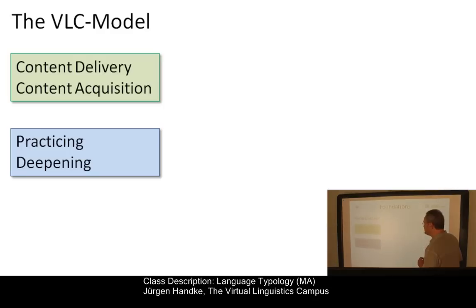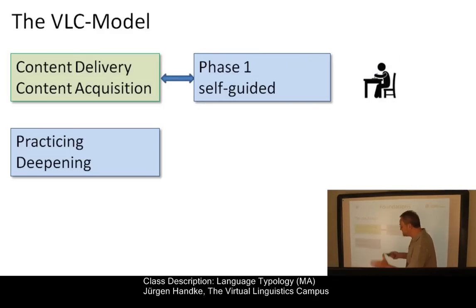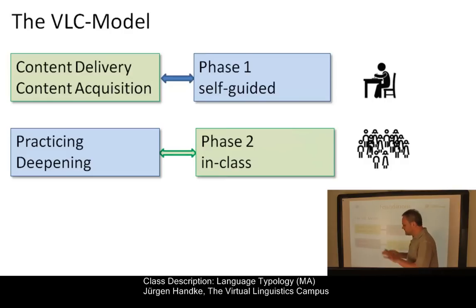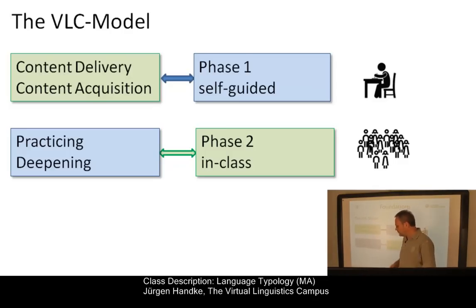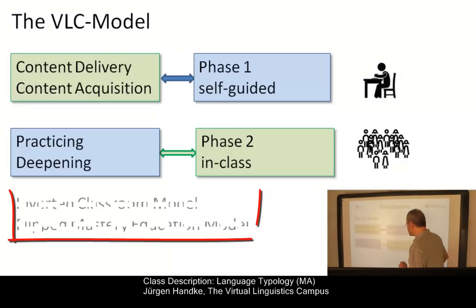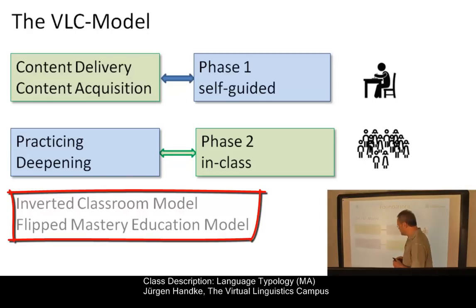We will flip these two activities. Content acquisition is now self-guided, takes place first, and is done online. The additional in-class phase is dedicated to practicing, rehearsing, discussion, and analysis. This means prior to each in-class meeting, students must have worked through the online content of the respective unit on their own. This approach is referred to as the inverted classroom model or the flipped mastery education model.